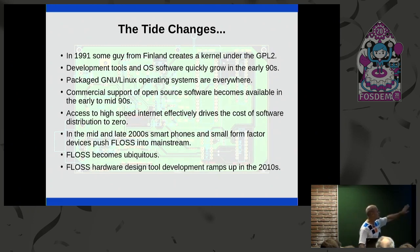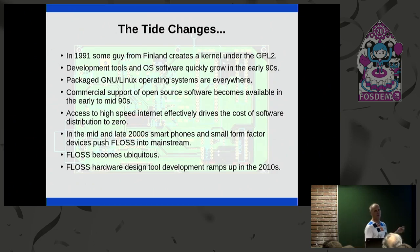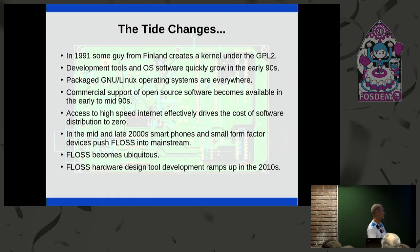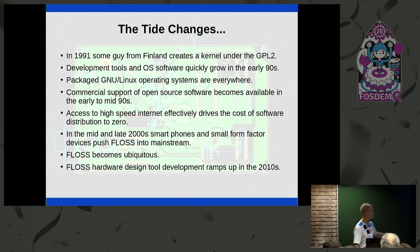Around this same time, a professor named Jean-Pierre Chirat at a university in France started working on a project called KiCad. KiCad goes back to just when the whole open source thing was really starting to take off. What really changed the tide was high-speed Internet access. Once high-speed Internet access became readily available, the effective cost of distributing software went to zero, and open source development was really in full swing.